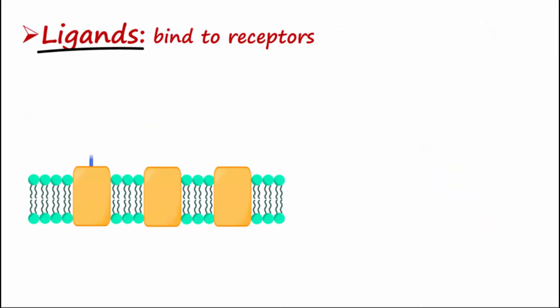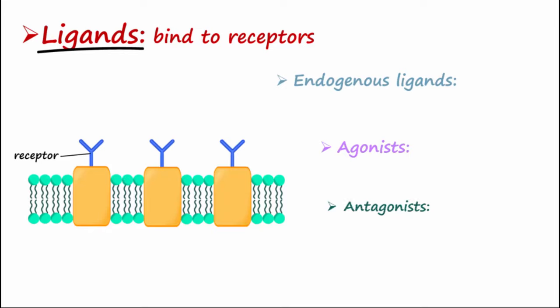Ligands bind to receptors. Endogenous ligands, agonists, and antagonists are examples of different ligands that bind to receptors.